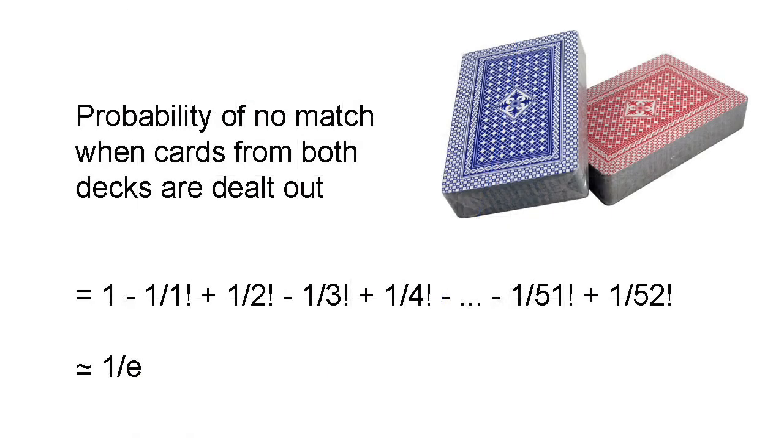Like Pi, E has a habit of appearing when least expected, and in areas of maths that seem totally unconnected. Suppose you have two packs of playing cards. You shuffle both of them independently, then deal out the first card of each deck, the second card, and so on. What's the probability that there's no match, that no two consecutive cards dealt are the same?